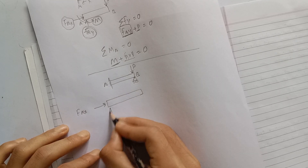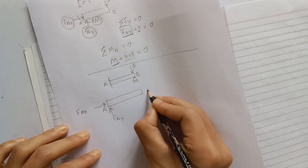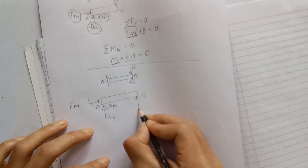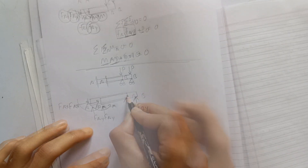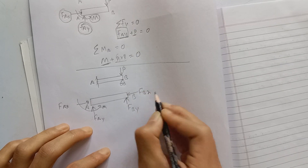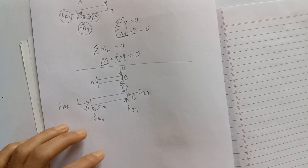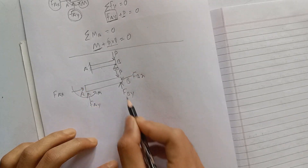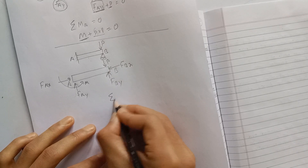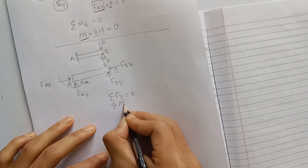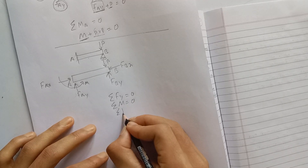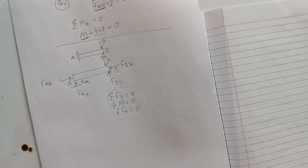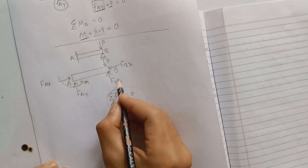Looking at the free body diagram: F_Ay and F_By are the vertical reaction forces at the supports. For a roller support, the reaction is along the Y axis, and F_BX is along the X axis. We apply the equilibrium equations: summation of F_Y equals zero, summation of moment equals zero, and summation of F_X equals zero — these are our static equilibrium equations.